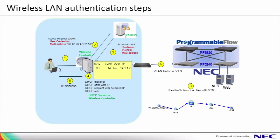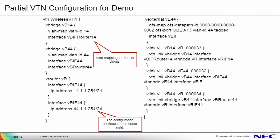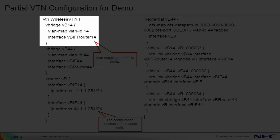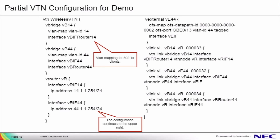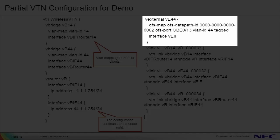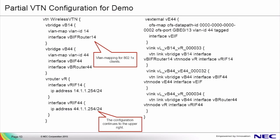Next, we'll show you the ProgrammableFlow controller configuration used in this scenario as well as in the upcoming demo. Here we're showing the VTN configuration for a wireless scenario. Notice we have a VTN called WirelessVTN that's configured with a VBridge called VB14. This VBridge has a VLAN map that ensures any tagged traffic received with a VLAN ID of 14 from our wireless users is mapped into the WirelessVTN. We also have a VExternal called VE44. A host connected to the proper port and sending traffic with a proper VLAN ID is mapped to this VExternal, ensuring that wireless users have access to an appropriate secure server.